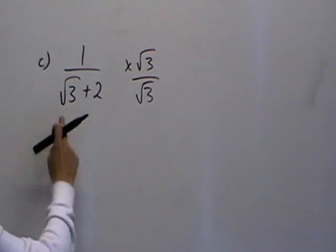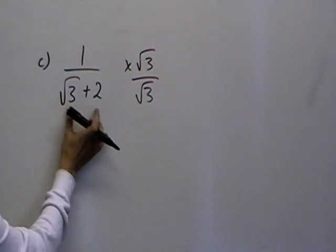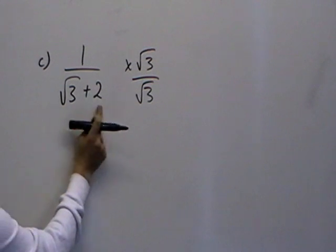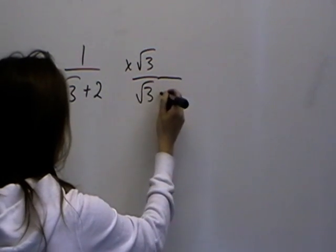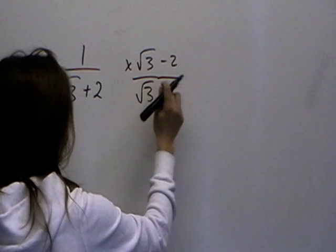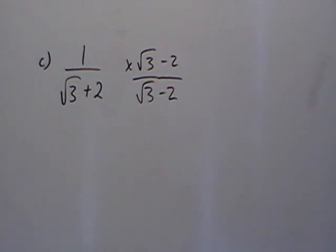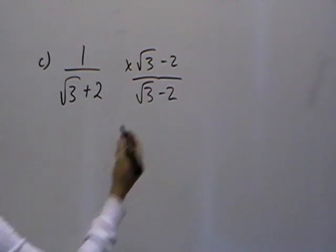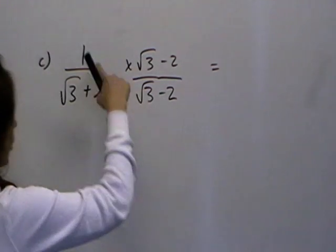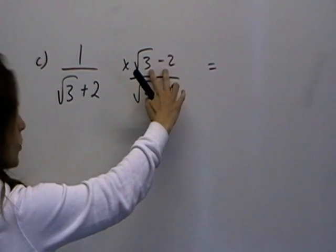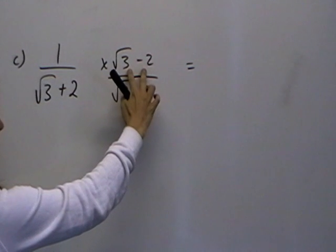Okay, so what we do this time is we change the sign on one of these terms. So I'm going to change the sign on the 2 and I'm going to multiply by root 3 minus 2. Again, I have to do the same to the top as to the bottom. And when we multiply them together, the top is 1 times root 3 minus 2. Anything multiplied by 1 just stays the same.